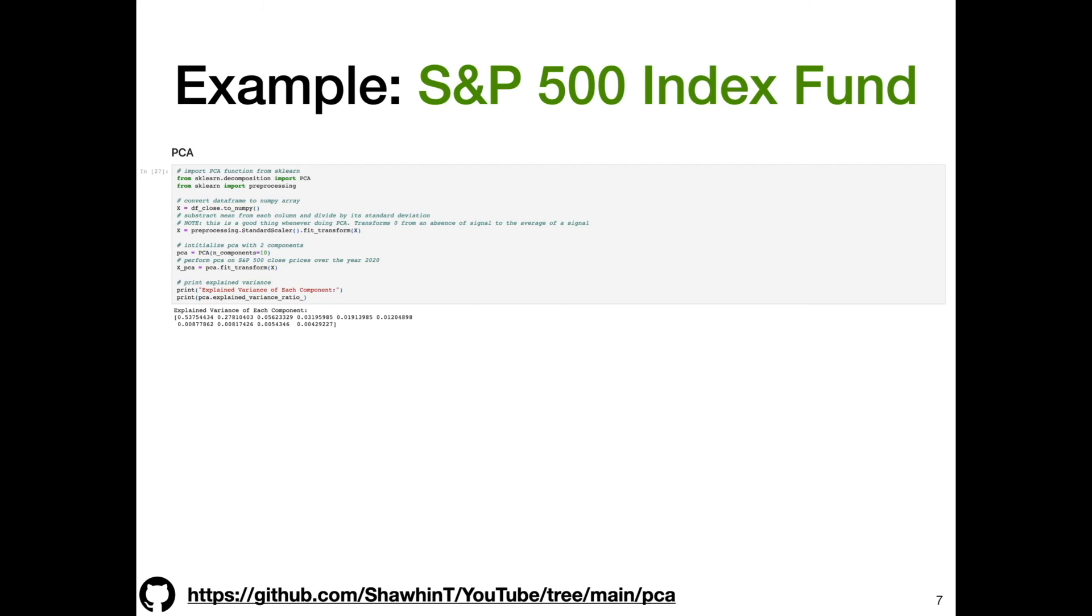Here we're initializing PCA with 10 components, and then we'll apply PCA to our dataset. We'll print the explained variance. You can see the first three components—you're already at more than 90 percent of the explained variance if you just sum up the first three elements of that array.